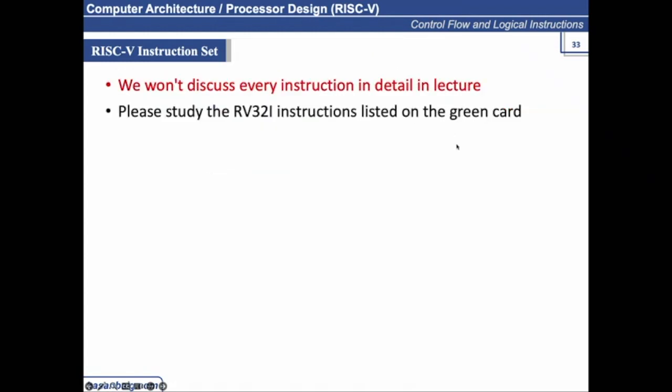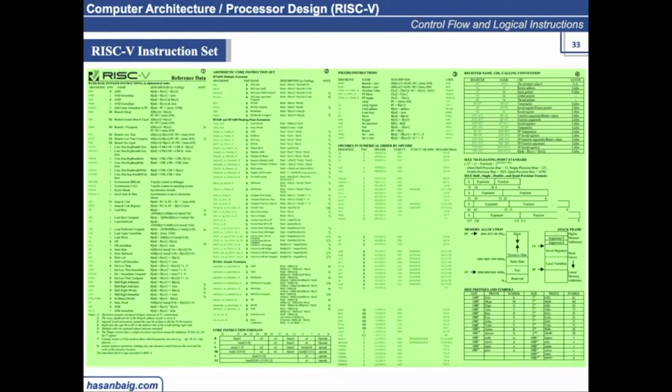But we are not going to discuss every instruction in detail in lectures. So you can study the RV-32I instruction listed on the green card in your book. It looks something like this. It has all the instructions that are discussed in the book and the format we will be discussing. I will be including snippets of this page periodically.